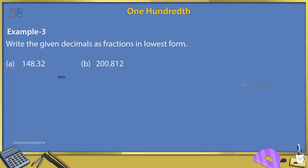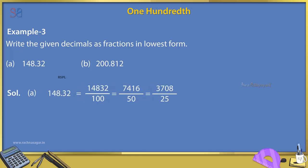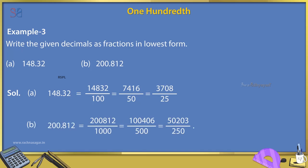Example 3: Write the given decimals as fractions in lowest form. A. 148.32. B. 200.812. Solution: A. 148.32 = 14,832/100 = 7,416/50 = 3,708/25. B. 200.812 = 200,812/1000 = 1,406/500 = 703/250.